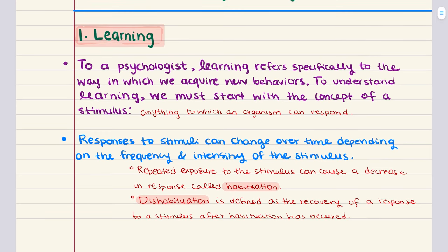Learning. So to a psychologist, learning refers specifically to the way in which we acquire new behaviors. To understand learning we have to first start with the concept of a stimulus. A stimulus can be defined as anything to which an organism can respond to. This includes all of the sensory inputs we discussed in chapter 2. The combination of a stimulus and response serves as the foundation for all behavioral learning. Responses to stimuli can change over time depending on the frequency and intensity of the stimulus. For instance, repeated exposure to the same stimulus can cause a decrease in response. This is called habituation.